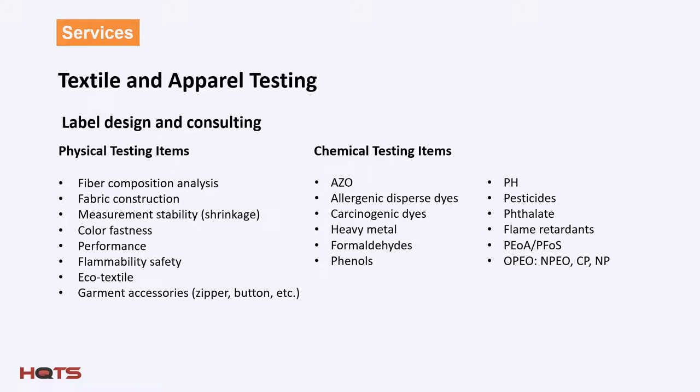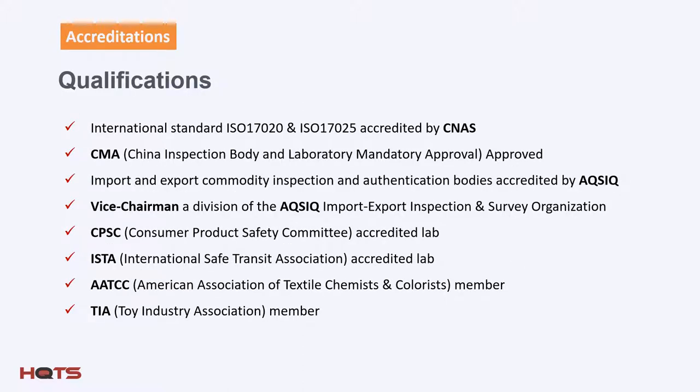Regarding textile and apparel labeling and testing, our team provides label consulting, including design, review, and advice for all textile products. Labeling requirements are only part of the regulatory maze — you must also confirm your product complies with all applicable substance regulations, such as REACH in the EU and Cal Prop 65 in California, USA. These regulations restrict lead, cadmium, azo dyes, and other substances that may be found in fabrics and other components. HQTS is accredited to perform textile and apparel testing, both physical and chemical. We believe HQTS is your best choice to help you navigate this disparate regulatory environment. Our qualifications include international accreditations and certifications, high-level involvement in standards committees, and long-time memberships in key industry organizations.